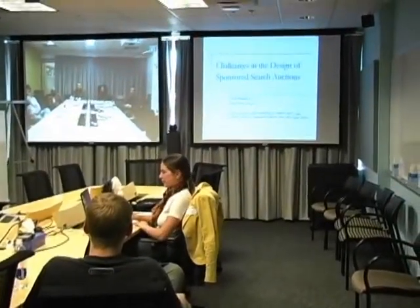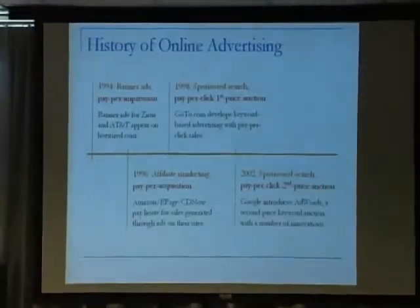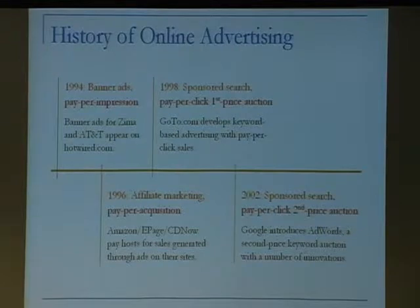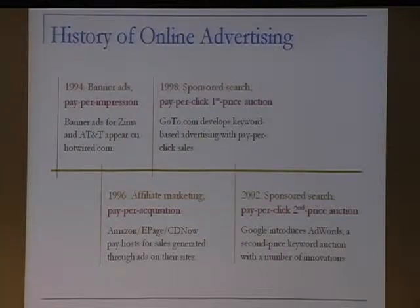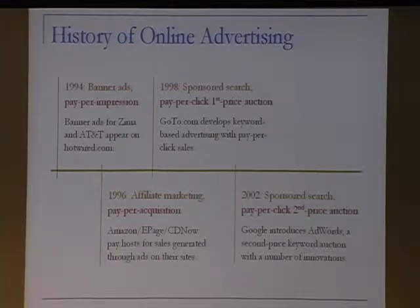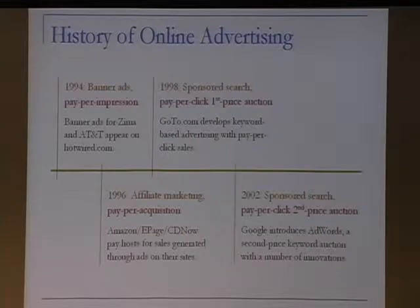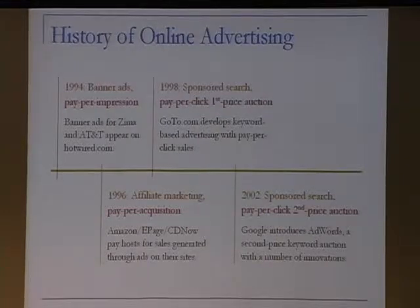I'm going to be talking about the challenges in the design of sponsored search auctions. In 1994 we saw the first online advertising in banner ads for Zima and AT&T, which appeared on Hotwire.com. They were sold in a pay-per-impression system and were quite successful in bringing the idea of monetization to online services. In 1996 we also started to see some affiliate marketing — ads for Amazon and CDNow and sites like that.